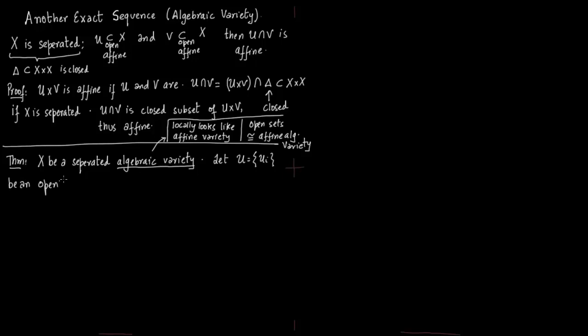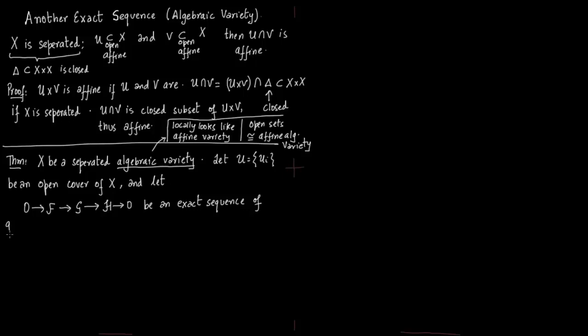There is a short exact sequence of quasi-coherent sheaves: 0 → F → G → H → 0. Then there is a long exact sequence of Čech cohomology.